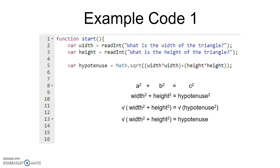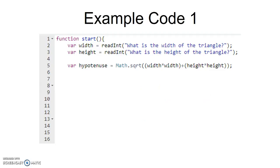We can write that expression in our code by using Math.sqrt and squaring the width and adding that to the square of the height. We're saving that as a new variable hypotenuse.